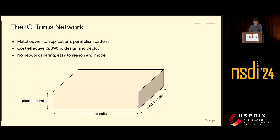The torus just saves us a lot of dollars. More importantly, we don't want this network to be shared at all — no contending flows — so TPUs can talk to each other with very predictable performance. That's critical for us to compile our models: we can anticipate time spent computing and communicating and overlap those things with precise prediction.